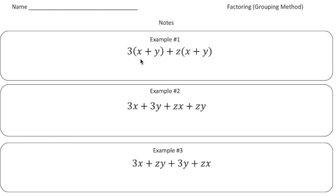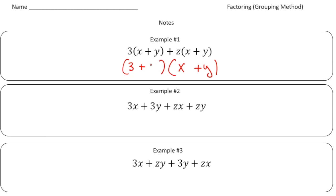If you notice, both the x and y here and also the x and y here are being multiplied by both the three and also the z. So what we can do is we can rewrite this — we can put an x plus y in one set of parentheses, and because we're multiplying both the three and the z by an x plus y, we can put a three plus a z in the other parentheses. So three plus z times x plus y would be the answer for this one.